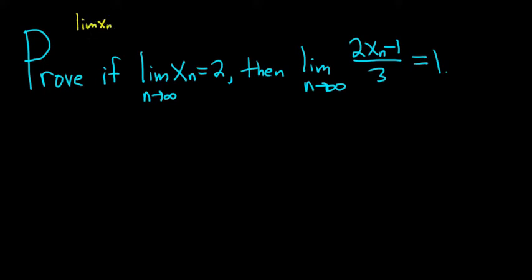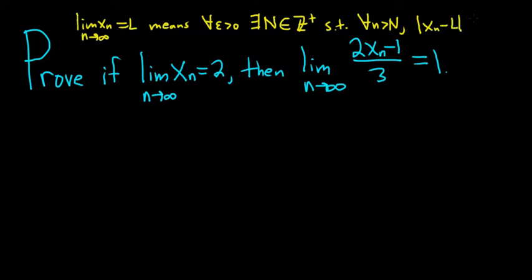So we say that the limit of x_n as n approaches infinity is equal to L. This means that for every epsilon greater than zero, no matter how small, we can find some positive integers. So there exists, that's what the backwards E means, an N in the set of positive integers such that whenever little n is bigger than capital N, so for all little n bigger than capital N, we have that the distance between x_n and L is smaller than epsilon. So that's the precise definition of a limit or the definition of a limit for sequences.